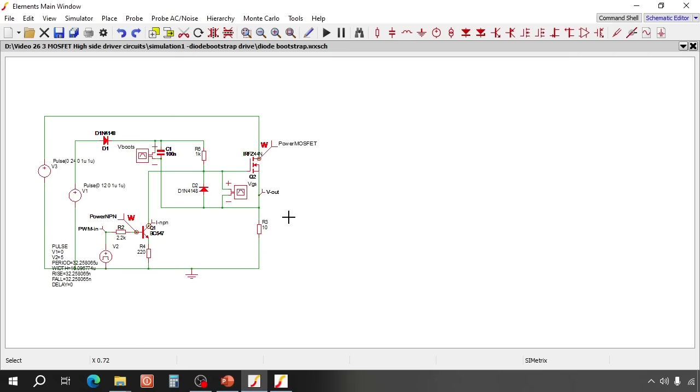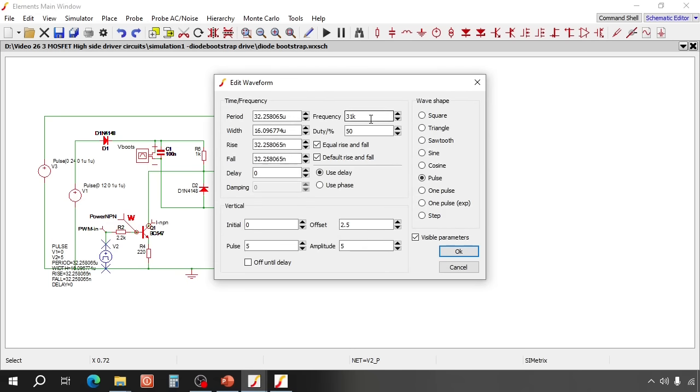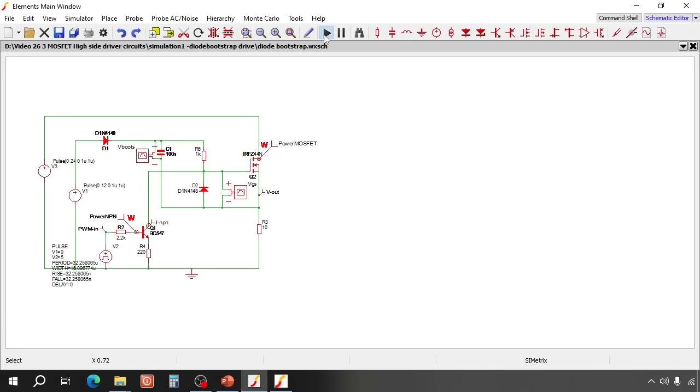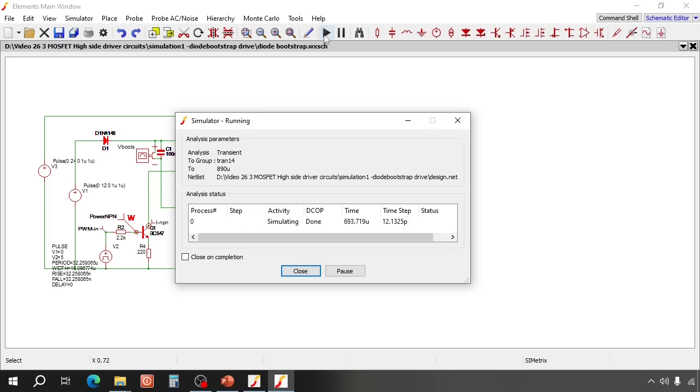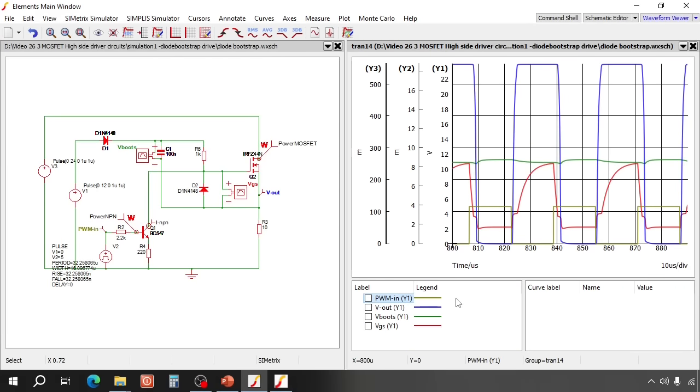Here is the circuit in the simulator. The signal is set to 31kHz 50% duty cycle, a suitable frequency for a basic buck converter. Let's simulate. This yellow line is the 5V logic input signal. The red line is the MOSFET gate source signal. The blue line is the output voltage. And this green line is the voltage on the bootstrap capacitor.